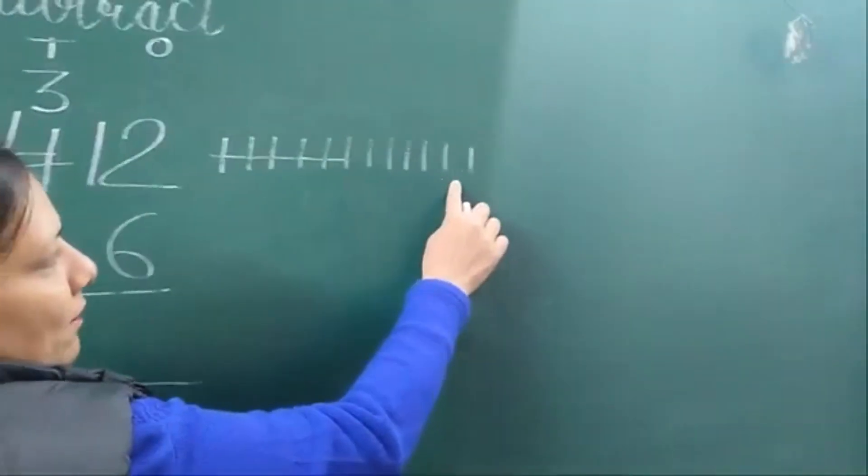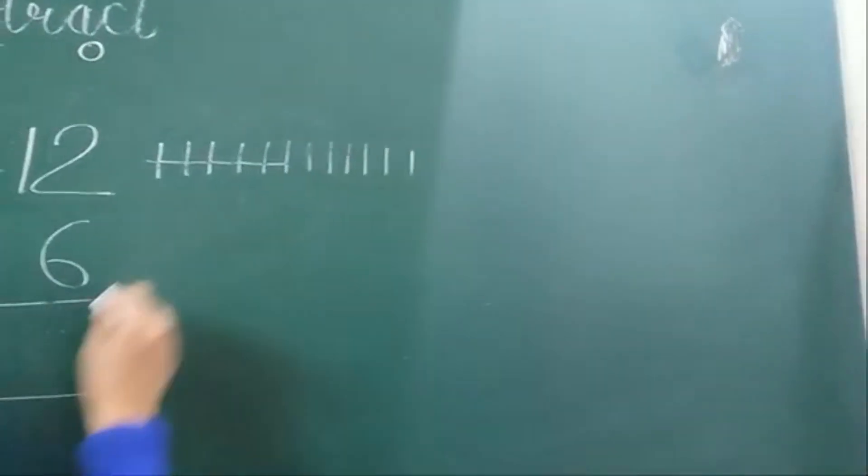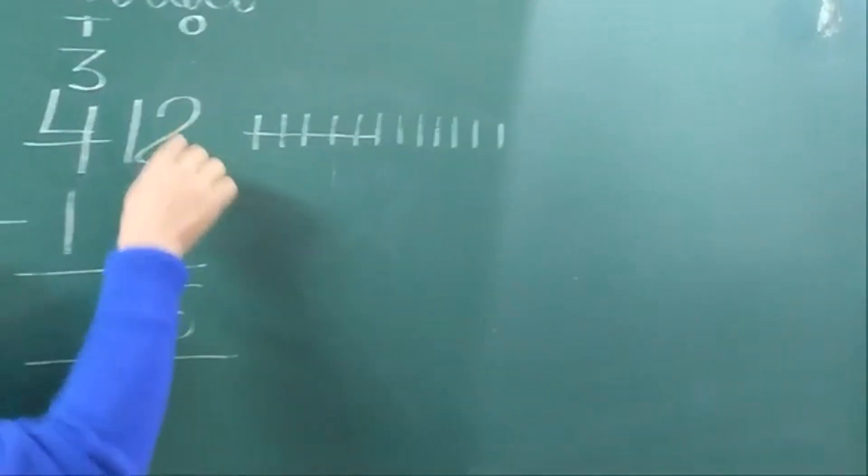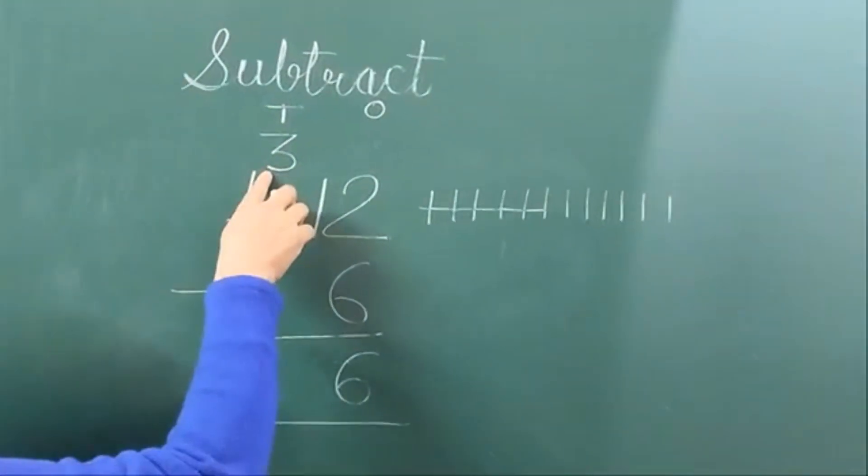How many lines are left? Count: 1, 2, 3, 4, 5, 6. So 12 minus 6 equals 6. Now look at the tens place.